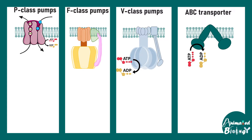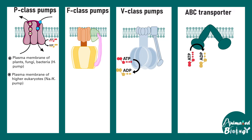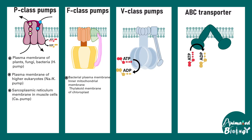P-class pumps are found in the plasma membrane of plants, fungi, and bacteria. In higher eukaryotes, almost every cell has a sodium-potassium ion exchange pump, and the sarcoplasmic reticulum has a calcium pump — these are all examples of P-class pumps. F-class pumps are very common in the bacterial plasma membrane, the inner membrane of mitochondria, and the thylakoid membrane of chloroplasts.